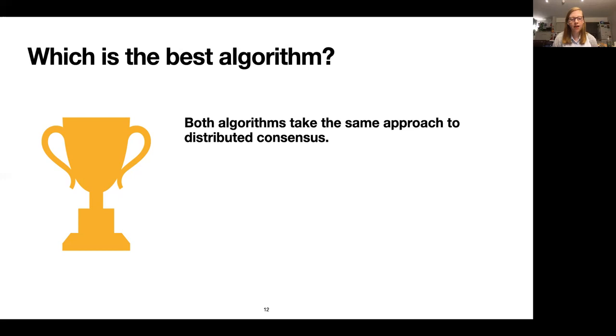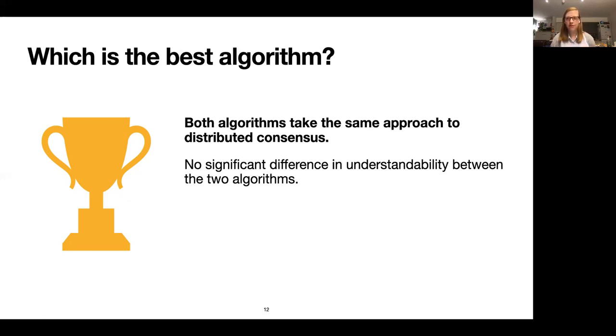However, there are these three differences, including the one that I mentioned before. If we look at those three differences, we can look at them in two different dimensions: understandability and efficiency. These are the two dimensions that were mentioned in the Raft paper. In terms of understandability, we concluded in this paper that there is no significant difference in the understandability between these two algorithms.